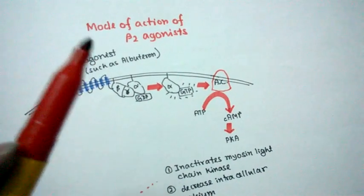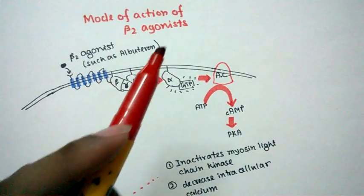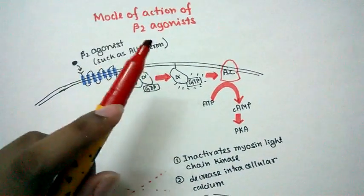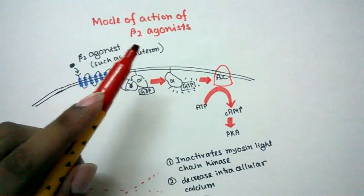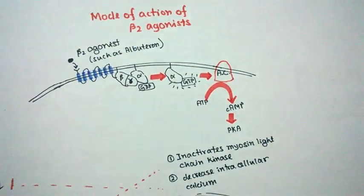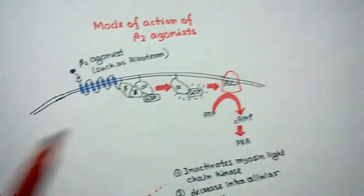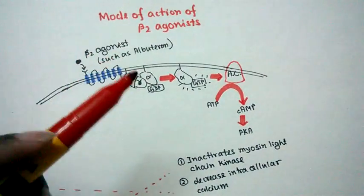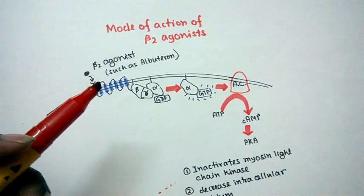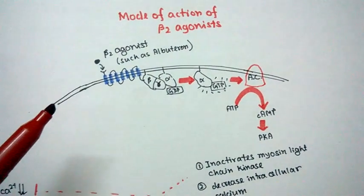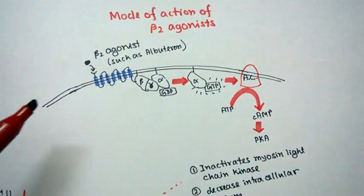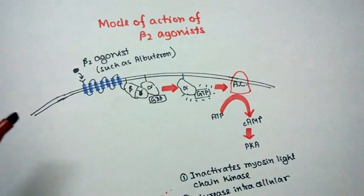In this video, I'm going to talk about the mode of action of beta-2 agonists. Beta-2 agonists are bronchodilators that can be used in the treatment of asthma or other reversible pulmonary diseases. One good example of beta-2 agonists is albuterone, which is a prototypic beta-2 agonist.